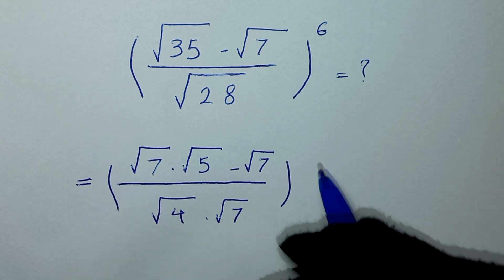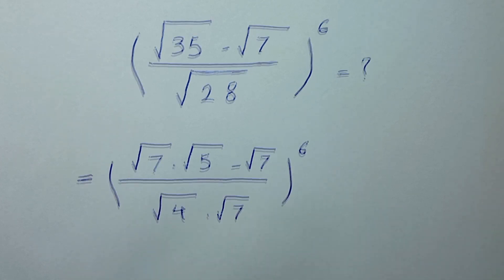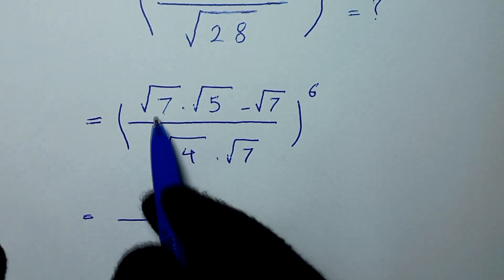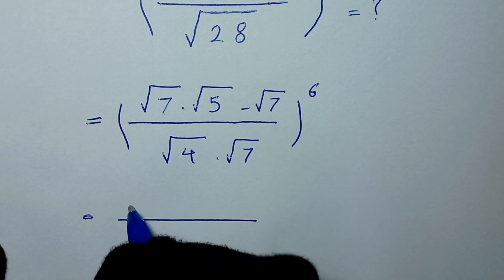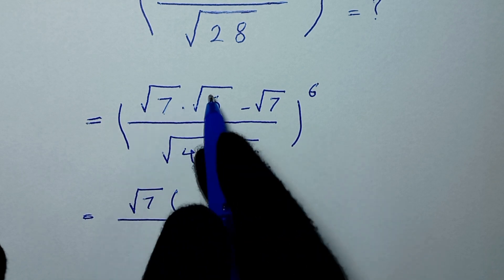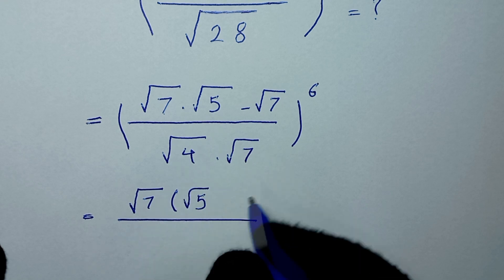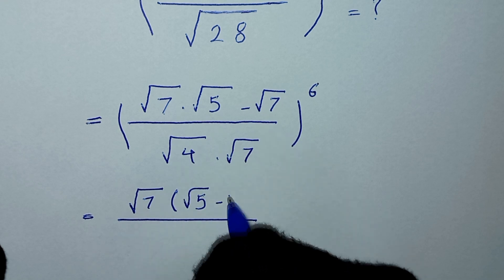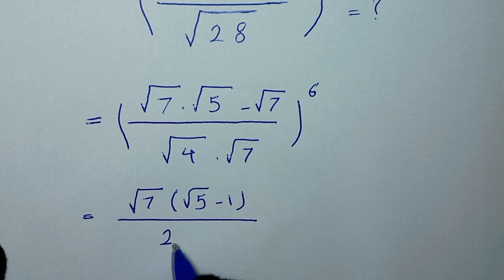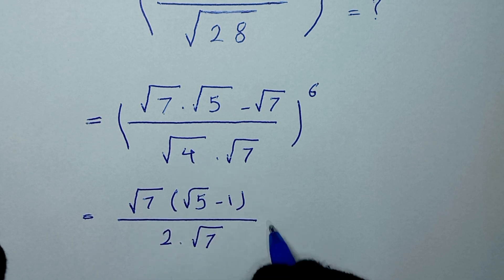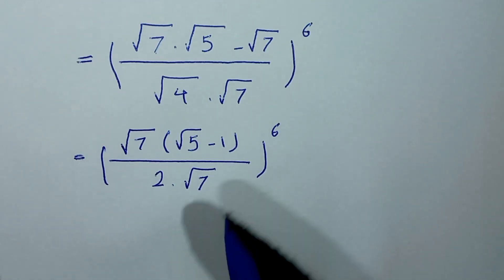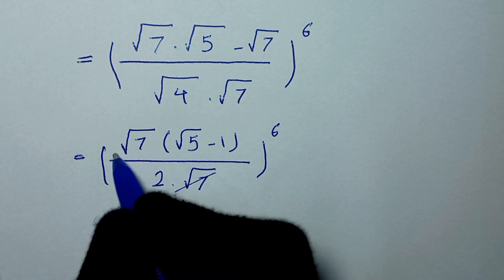To the power of 6. In the next step, we factor out square root of 7. This divided by this gives square root of 5, and this divided by this gives negative 1 over 2, since square root of 4 is 2. So we get square root of 7 to the power of 6, and from here this cancels this.